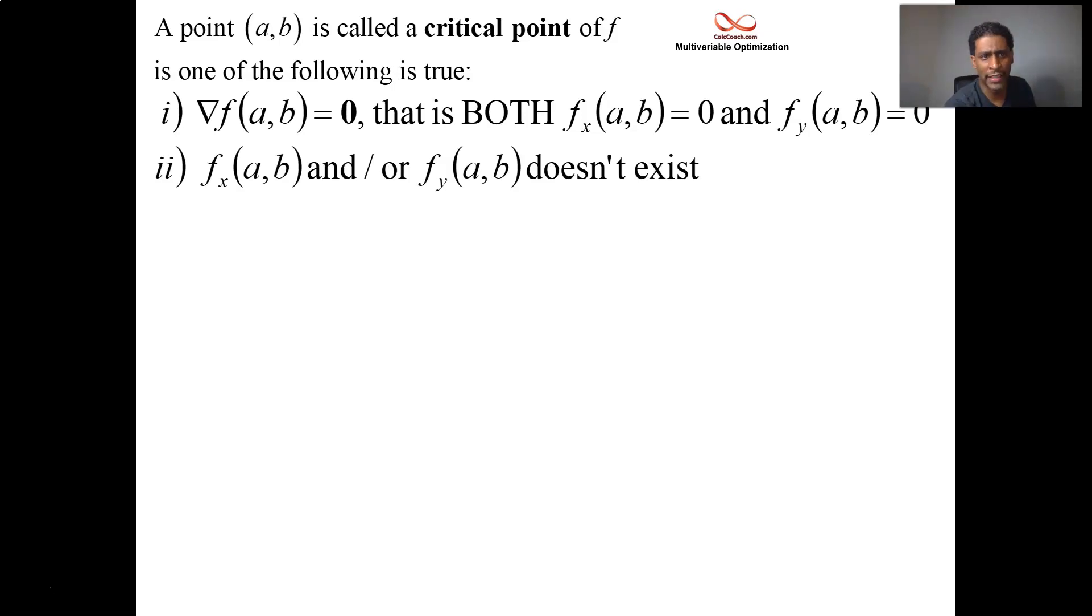Also, it could be that f_x or f_y maybe does not exist as well. That gives you critical points as well. But for that does not exist case, it has to be - yes, your partials don't exist, but your function does. It can't be some point that's not in your domain. It needs to be in the domain of your original function, but not in the domain of the partial.